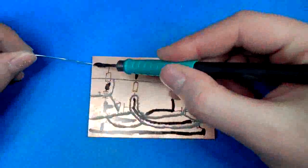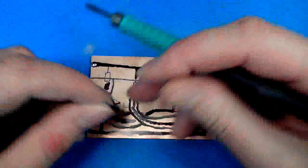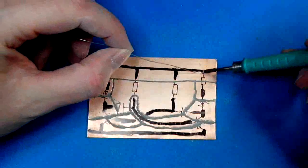Let's tin all the points where we want to solder components. There's the positive terminal. Put a blob of solder there. That's a resistor. And so on.